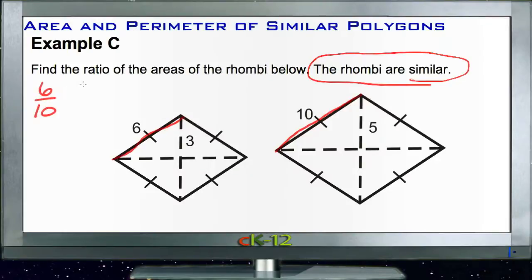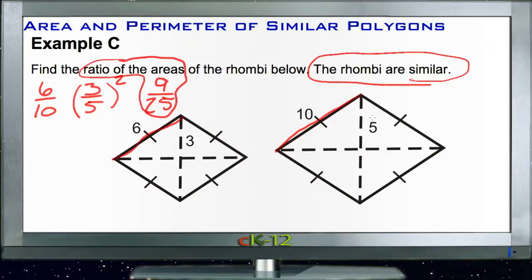And then if we're looking for the area relationship, we just need to square that. So we'll square 3 over 5. 3 squared is 9 and 5 squared is 25. So the ratio of their areas is 9 out of 25, and we're done.